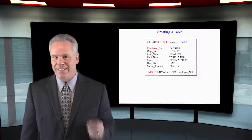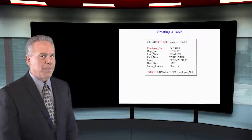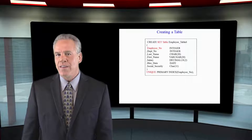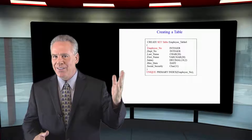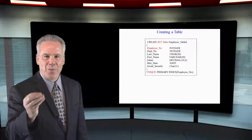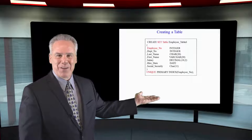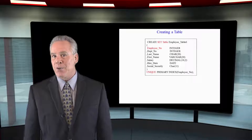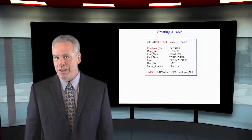Here you can see we have a set table, but we also have a unique primary index. The great thing about any unique index on a set table is there's no duplicate row check, because we can't even have a duplicate employee number — it's a unique primary index. So it would be impossible to have a duplicate row. This is a great technique when dealing with a set table if you want to avoid the duplicate row check.